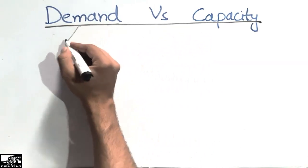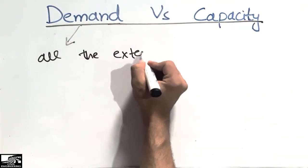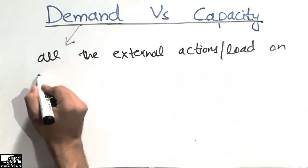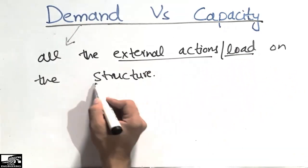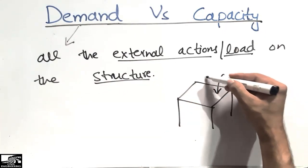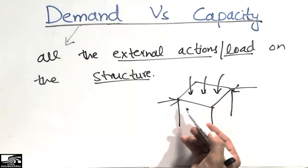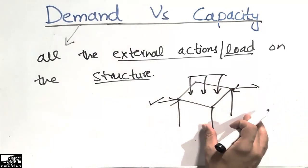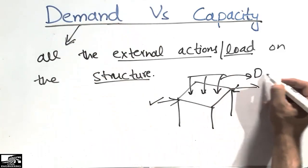First, to define the term 'demand': the demand can be defined as all the external actions or loads coming on the structure. For example, consider a building where dead load, live load, wind load, or earthquake load is coming on the building. We call these external actions or loads the demand on the structure.